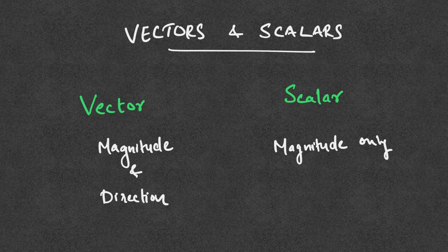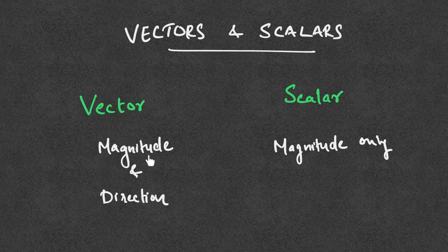What is a vector and what is a scalar? What is a physical quantity? What is mass, distance, velocity, displacement, force? Vectors are physical quantities with both magnitude and direction, whereas scalars are quantities with only magnitude.